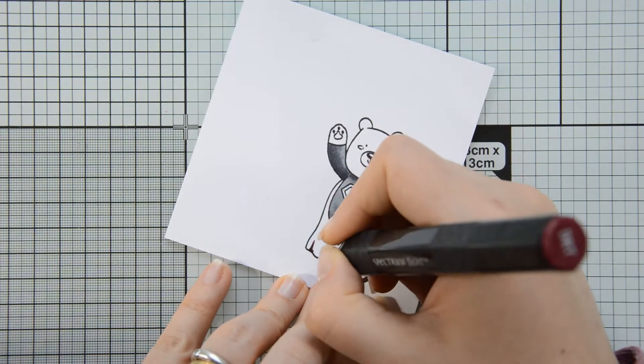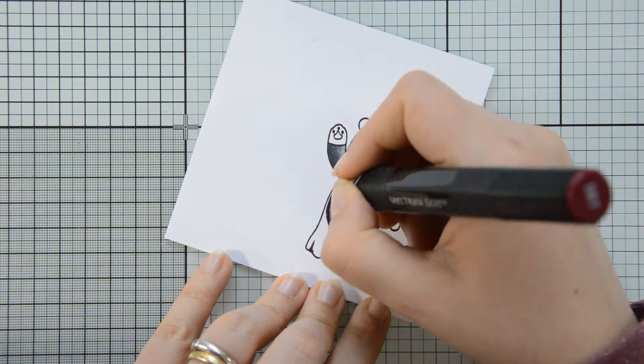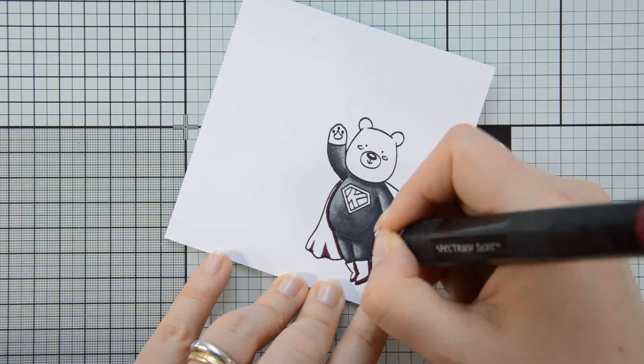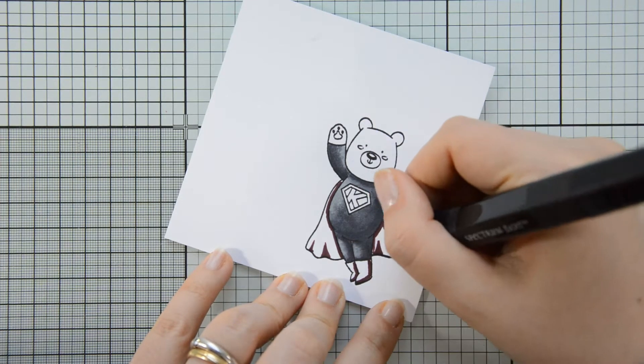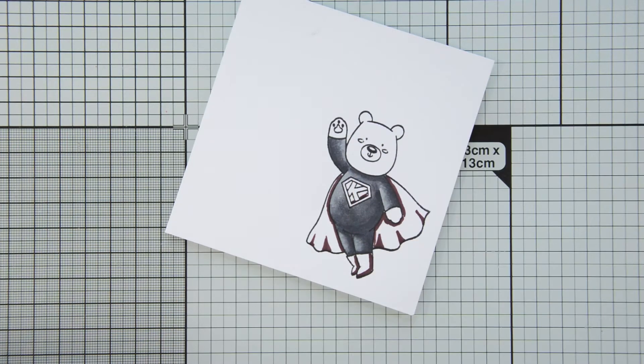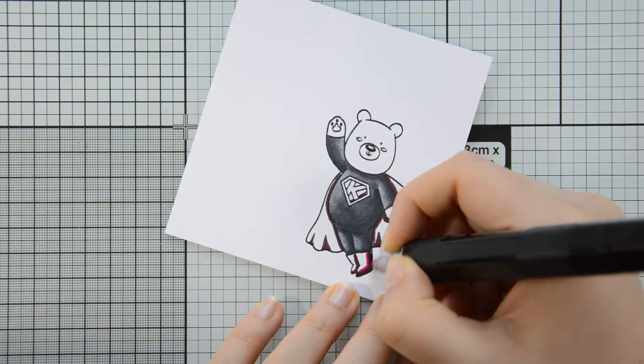For the boots, the cape, and the inner part of the logo on Kobe's chest, I decided to use some reds. I started with my darkest red, which is the DR7 marker, and I am using it to build my shadows. I am then blending it out with the DR6 marker.